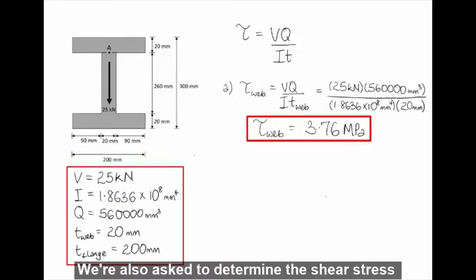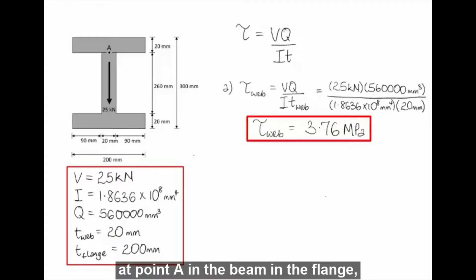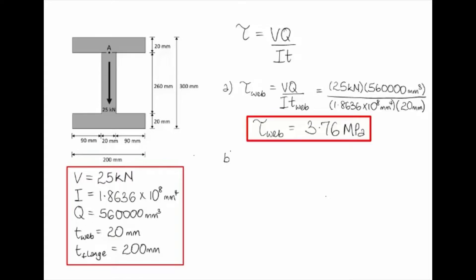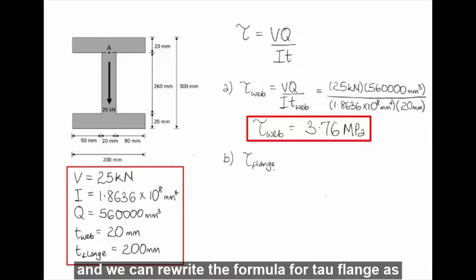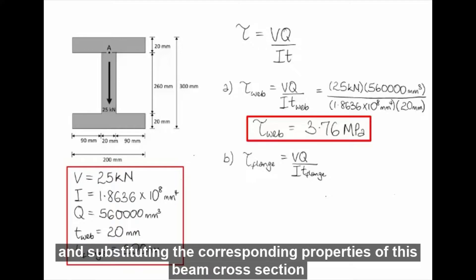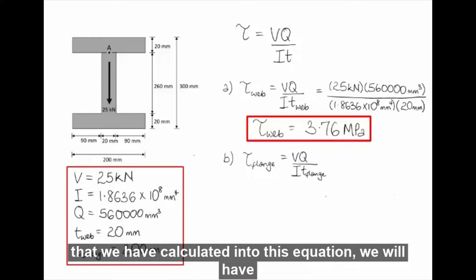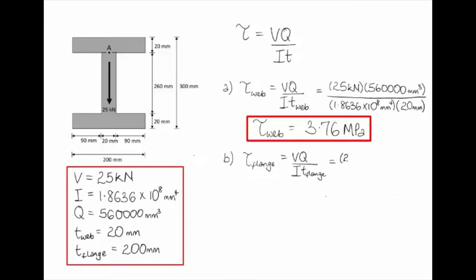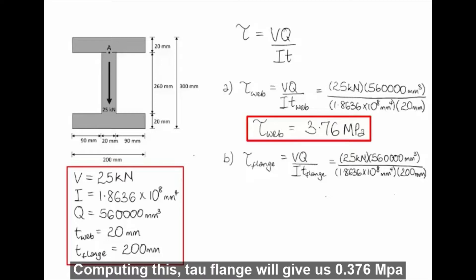We're also asked to determine the shear stress at point A in the flange, tau-flange. Rewriting the formula and substituting the corresponding properties of this beam cross-section, computing gives us tau-flange equals 0.376 MPa.